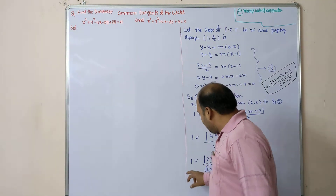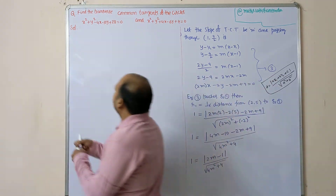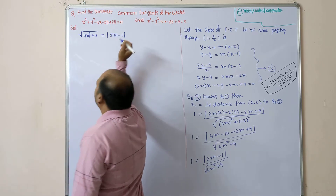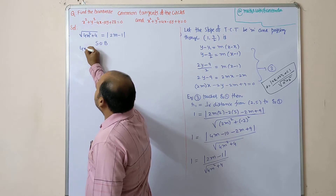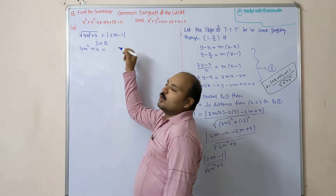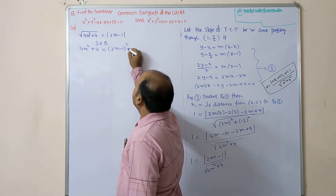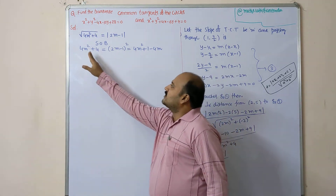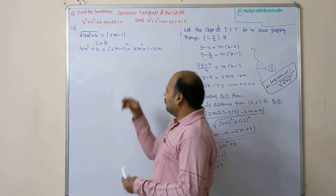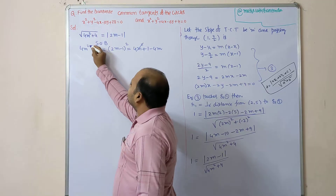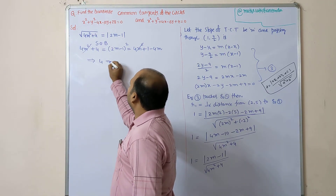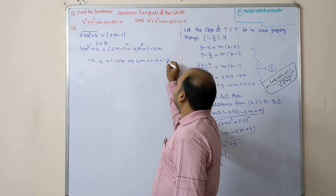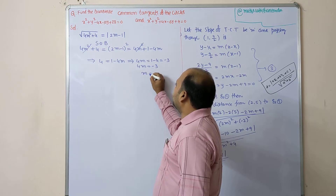Cross-multiplying: √(4m² + 4) = |2m − 1|. Squaring both sides: 4m² + 4 = (2m − 1)² = 4m² − 4m + 1. The 4m² terms cancel, leaving 4 = 1 − 4m, so 4m = −3, giving m = −3/4.